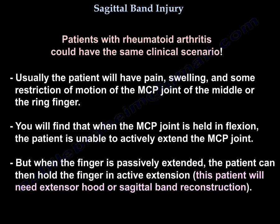Patients with rheumatoid arthritis could have the same clinical scenario. Usually the patient will have pain, swelling, and some restriction of motion of the MCP joint of the middle or ring finger. When the MCP joint is held in flexion, the patient is unable to actively extend the MCP joint. But when the finger is passively extended, the patient can then hold the finger in active extension.